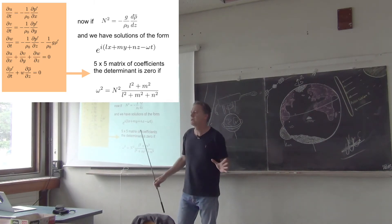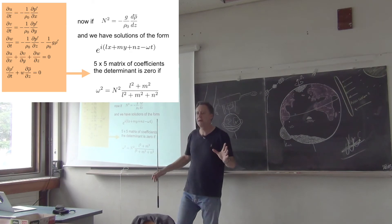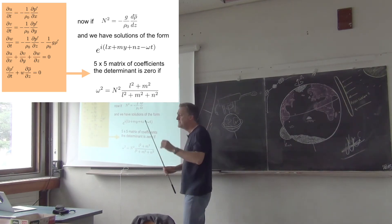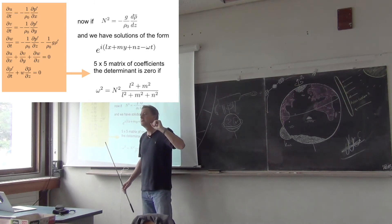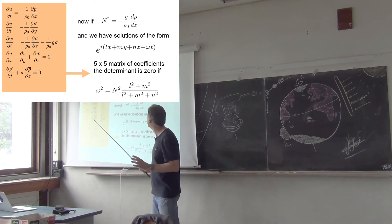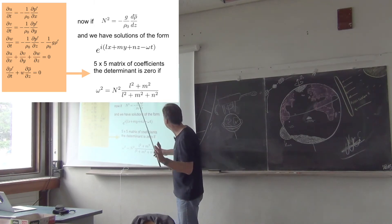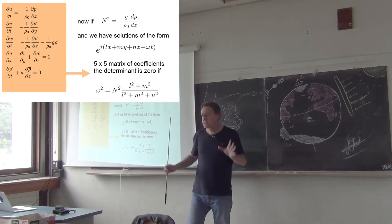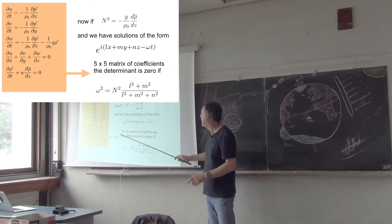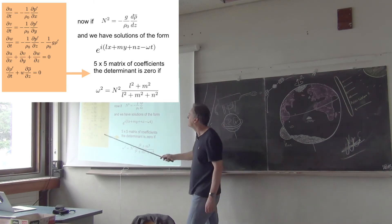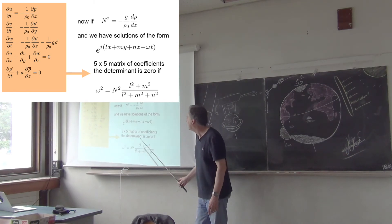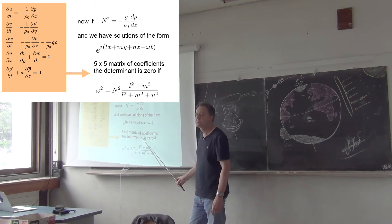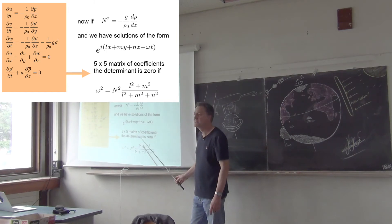And, if we put those solutions into these differential equations, what comes out is algebraic equations. Linear algebraic equations which contain the coefficients, u tilde, v tilde, etc., contain geophysical parameters, so n squared and g, for example, and contain information about the waves, so that'll be l, m, n, and ω. So, you'll get a five by five matrix of coefficients.